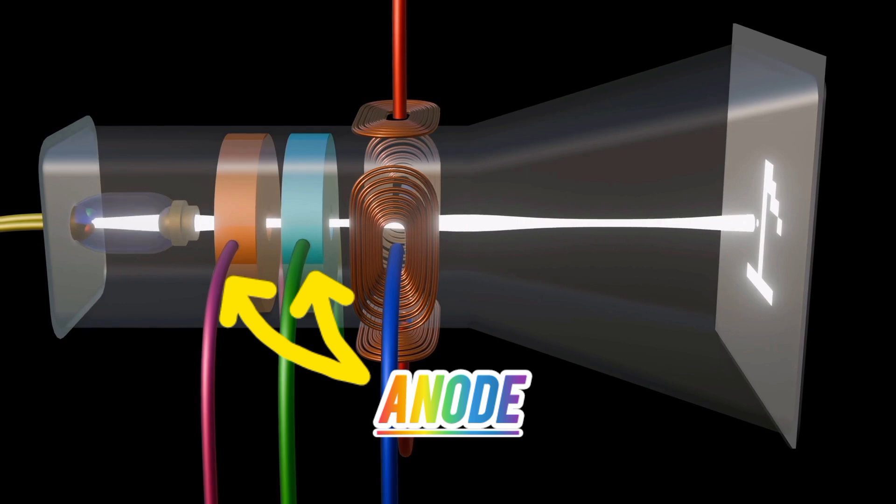It contains two anodes, one to focus the electron beams, and the other to accelerate the beam further.